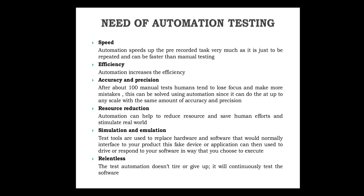Next is resource reduction — in automation testing we can reduce resources and human efforts by using a tool. Next is simulation and emulation: if your application requires hardware or software support that cannot be provided at testing time, you can simulate and emulate a particular fake device or fake software/hardware input with the application to test it. This is possible in automation testing.